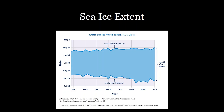Additionally, the melt season has been getting longer and longer. Sea ice used to only melt between mid-June and mid-September, but that season has extended by nearly a month and a half, allowing sea ice to melt for a longer period of time and therefore its extent to drop more easily.